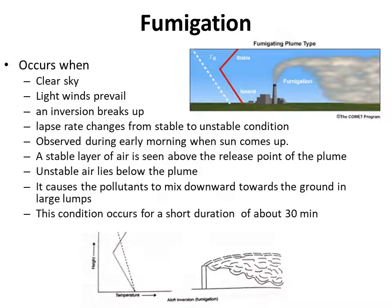Fumigation is a type of plume behavior that occurs during clear sky when light winds prevail and an inversion breaks up. During this time the lapse rate changes from stable to unstable. It is observed during early morning when the sun comes up. A stable layer of air is seen above the release point of the plume, while unstable air lies below the plume. It causes pollutants to mix downward towards the ground in large lumps.